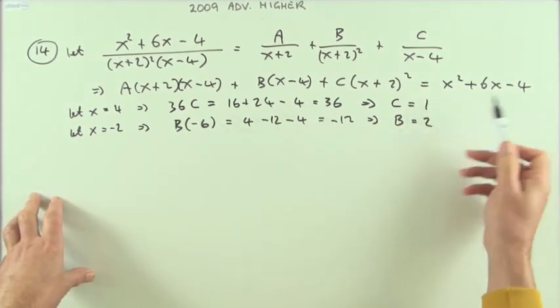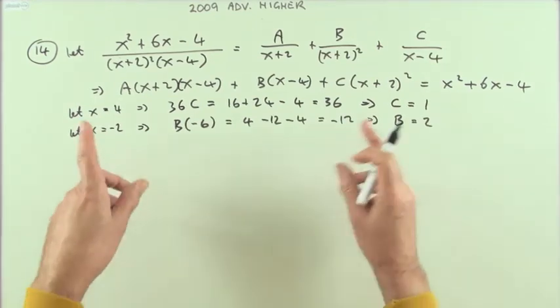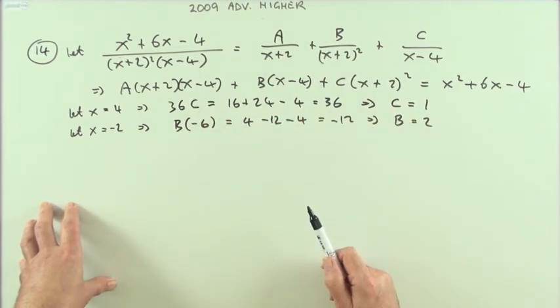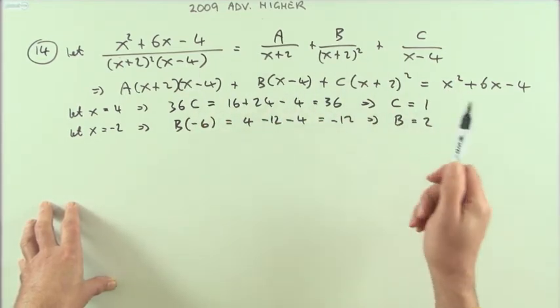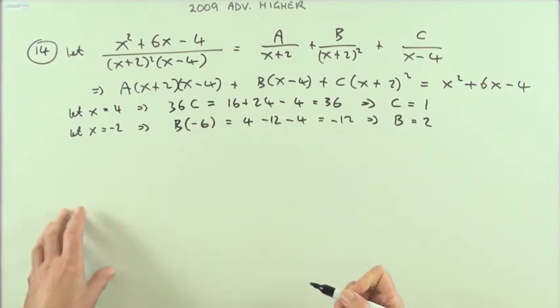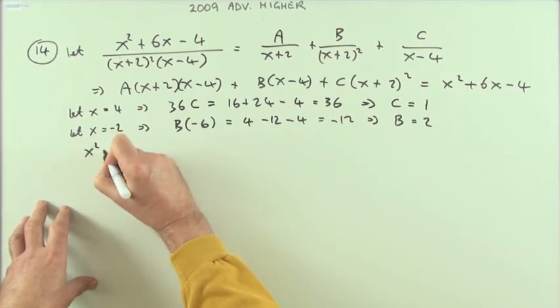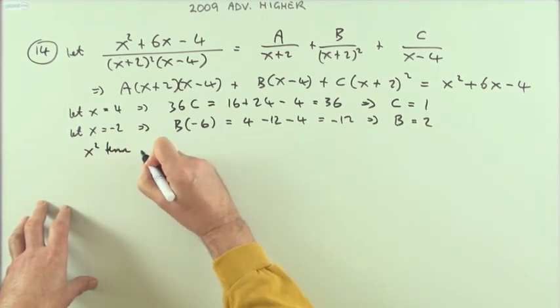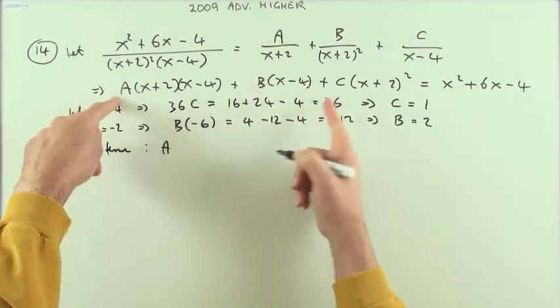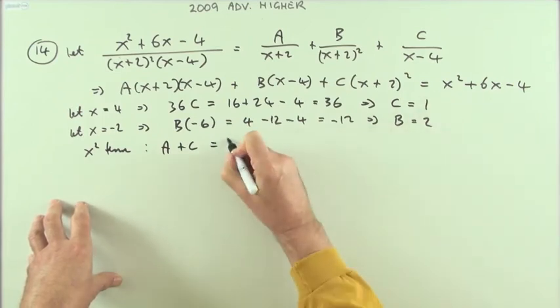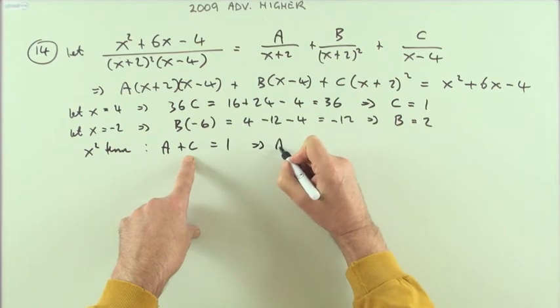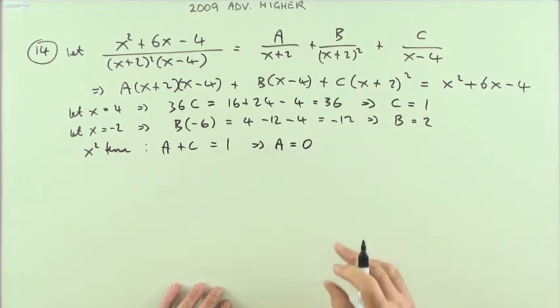Which means that b must be... divided by negative 6, b is 2. Now since there's no more knockout values, I'll just refer to the formal mathematical method for equivalent statements, which is: if these two expressions are meant to be the same, their corresponding terms must be the same. So I'll take the x² term, for instance. For the x² term I've got an A, none there, and a C. And the A and the C must make 1.